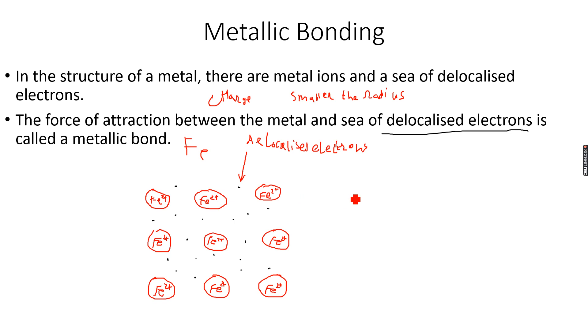For example, the top layer can slide towards the right and the electrons will move along with it, so the metallic bond will not be broken. And that's why metals are malleable and ductile.